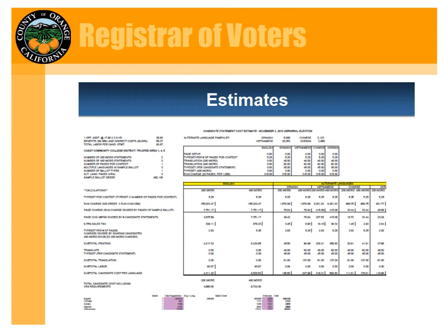The second piece of our candidate statement estimate is translation into Chinese, Korean, Spanish, and Vietnamese — the languages required for Orange County under the Voting Rights Act. That amount is pretty much a fixed amount. We are charged $45 per candidate statement per language, as well as 23 cents per word, maxed out at 200 words or the maximum limit for that particular candidate statement. Note that a city name counts as one word — so Rancho Santa Margarita would be one word — and we don't pass on any different interpretation from the translation company.